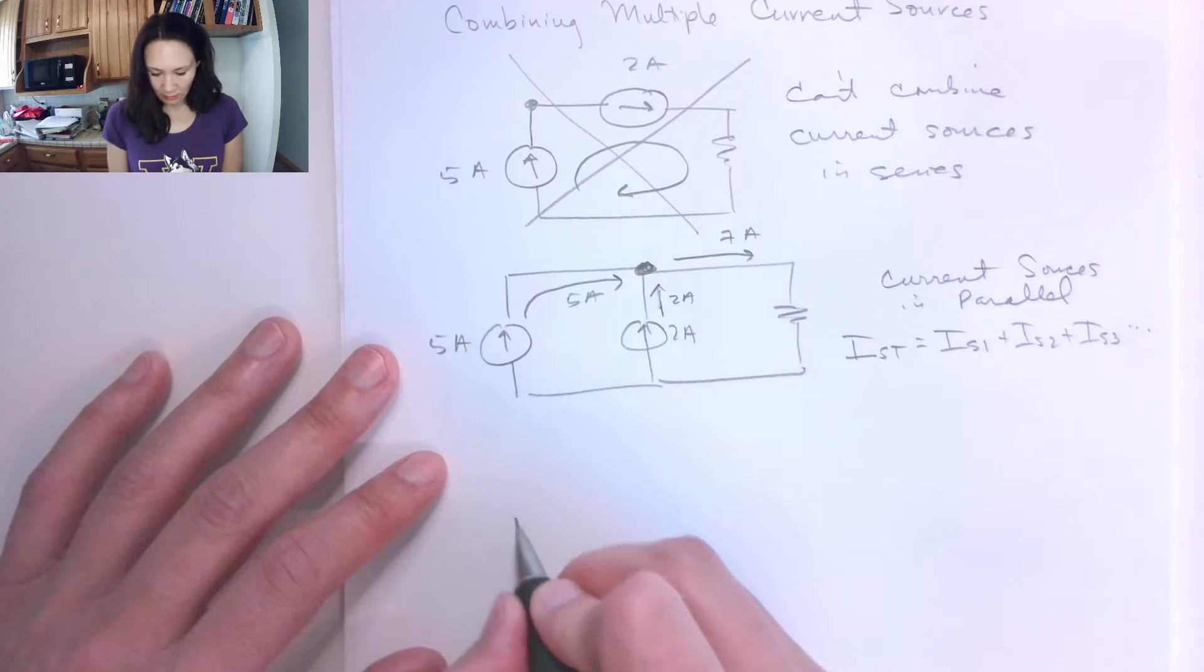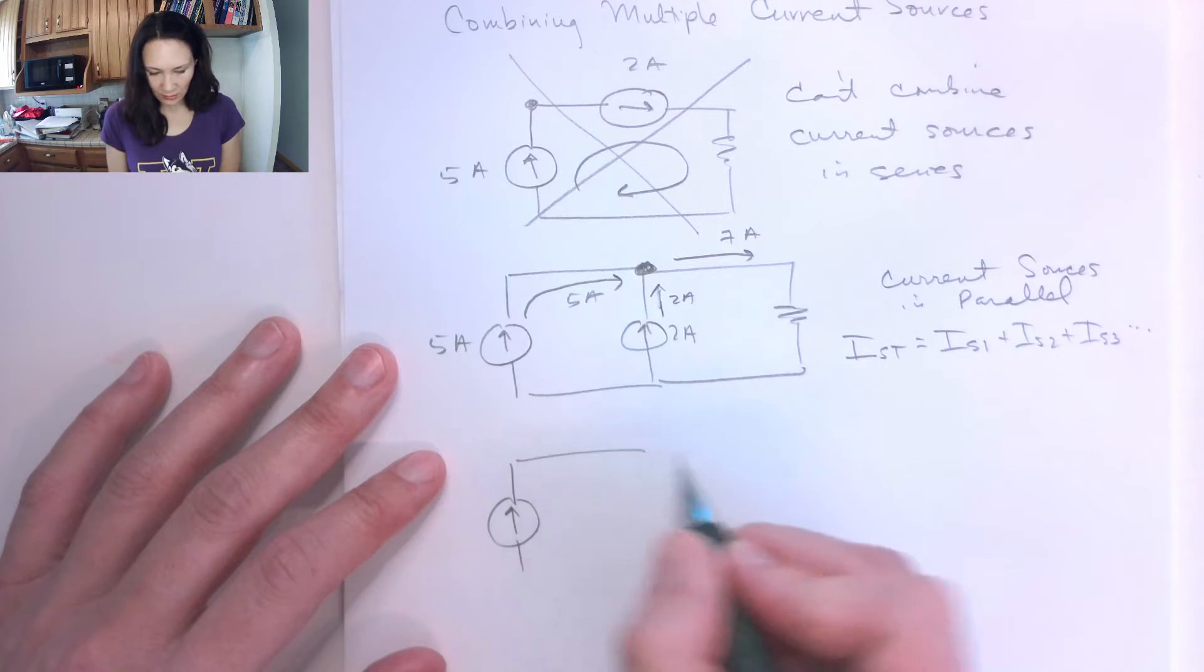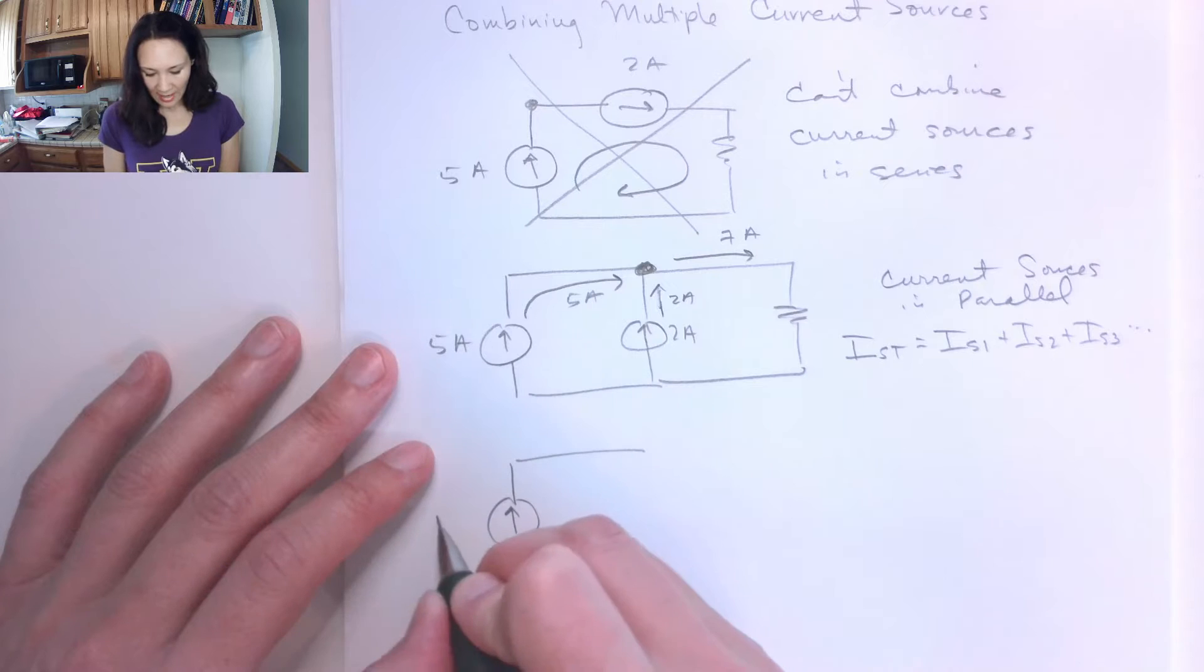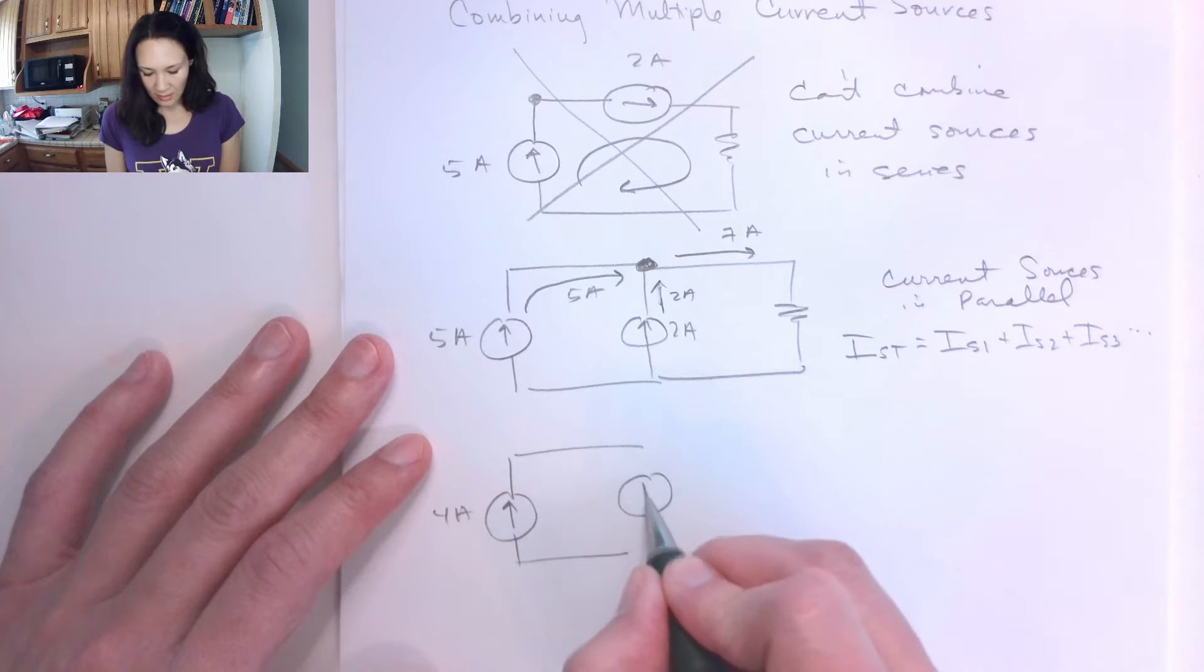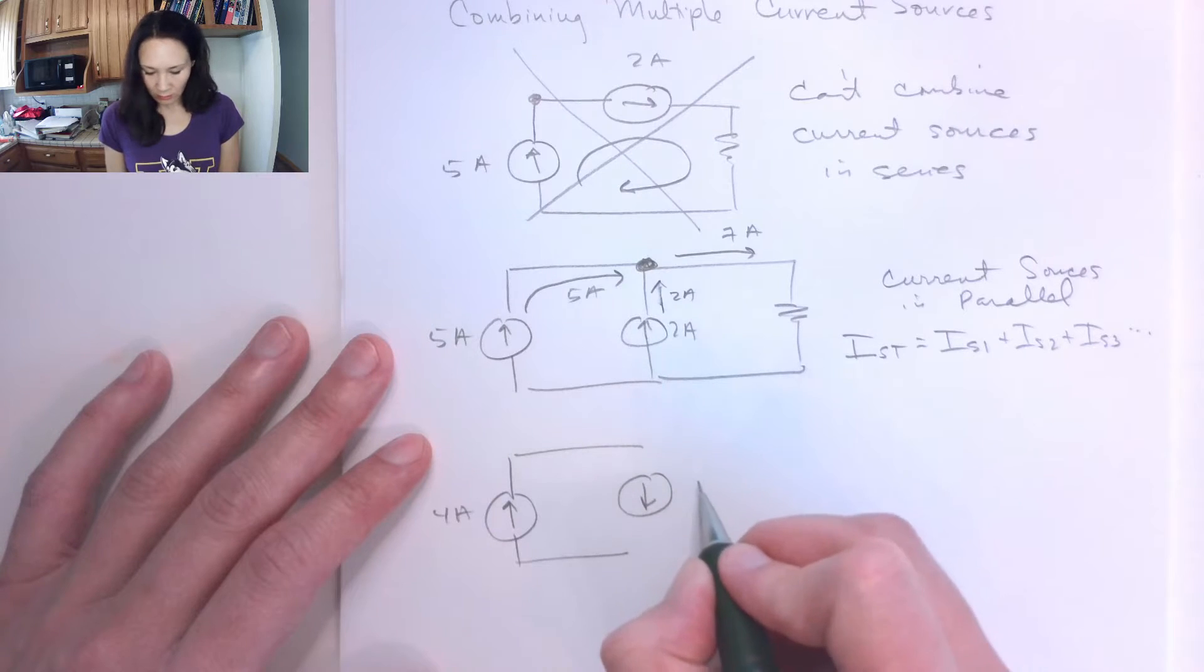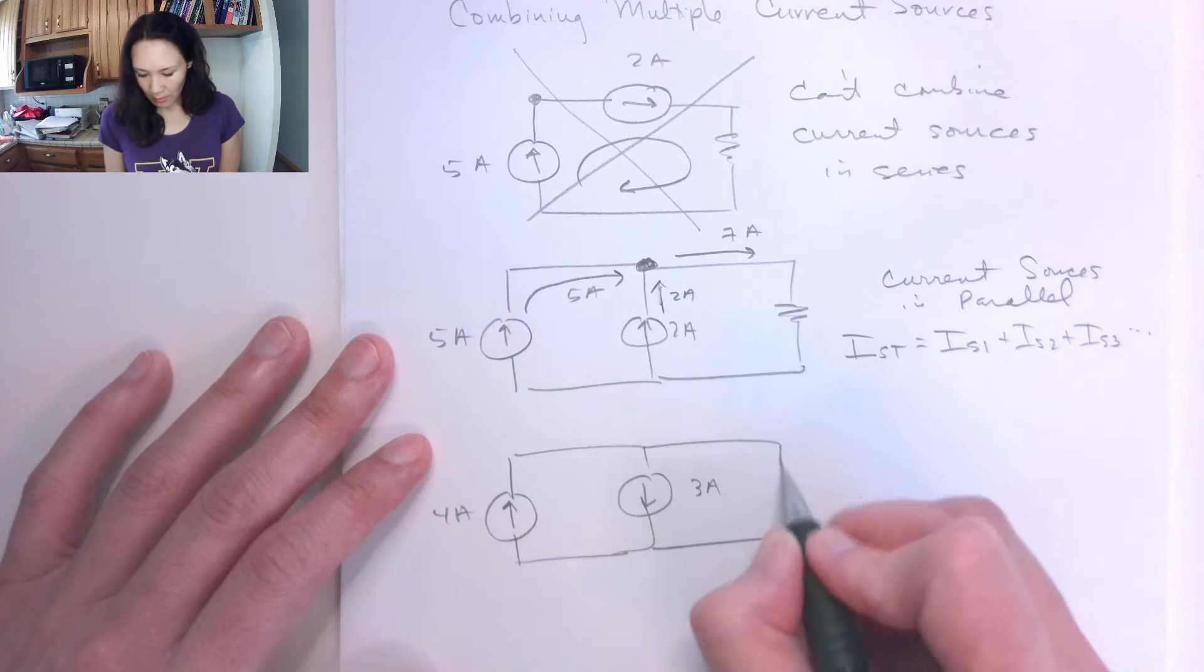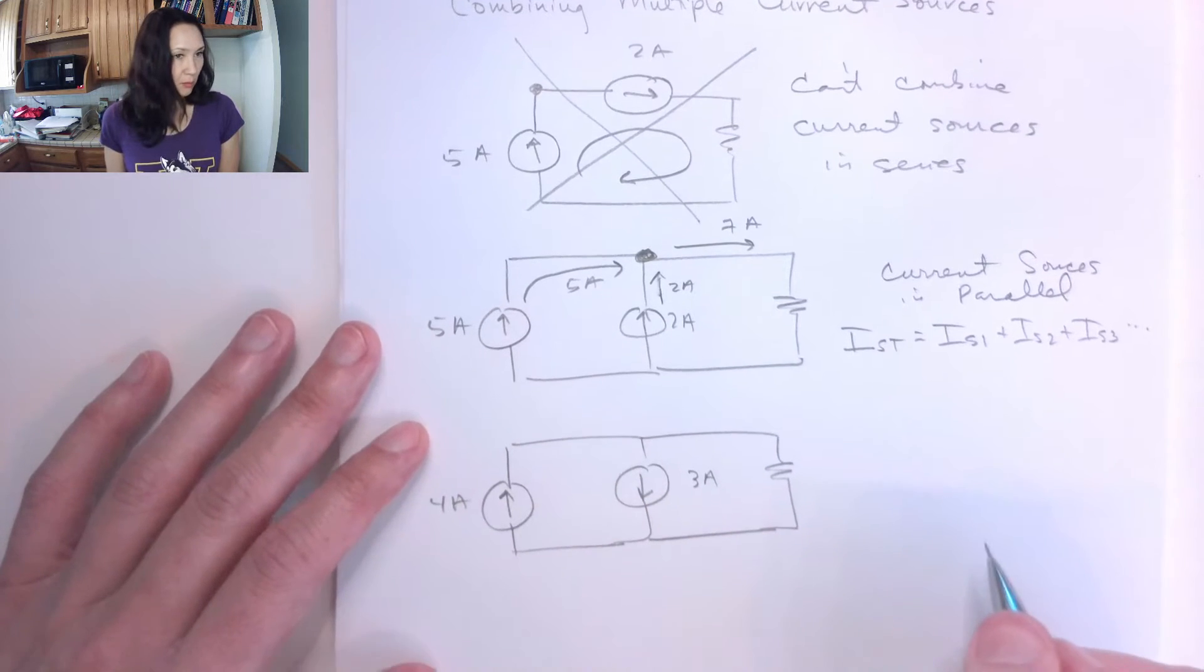So similarly, what if they are pointed in opposite directions? Suppose we have a 4 amp current source coming up this way, and then maybe we have a 3 amp current source that's going down this way in parallel connected to some load right here.